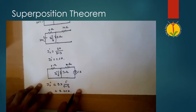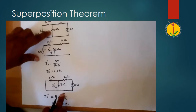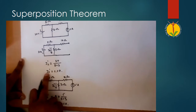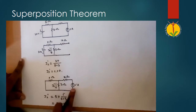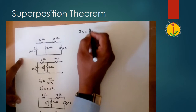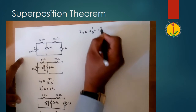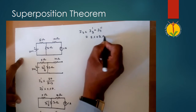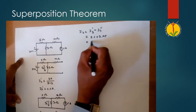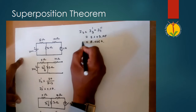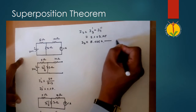As per the superposition theorem, the total current flowing through the 3 ohm resistor is the sum of the current due to the 20 volt voltage source and the current due to the 5 ampere current source. So I3 equals I3' plus I3'', which is 2.5 plus 3.125, equal to 5.625 amperes. Let us denote this as A.